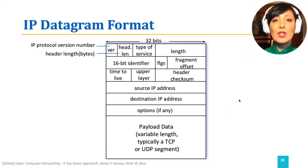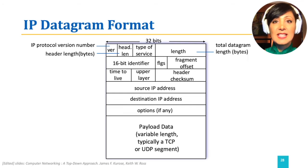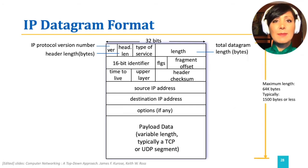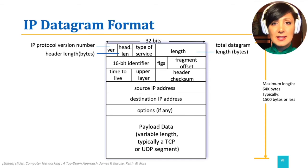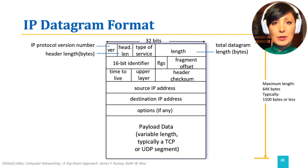The total length field is 2 bytes, specifying the length of the datagram. Since it is 2 bytes, it can theoretically specify up to 65,535 bytes for the length, but a typical IP datagram is about 1,500 bytes.